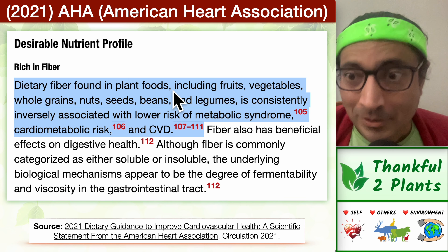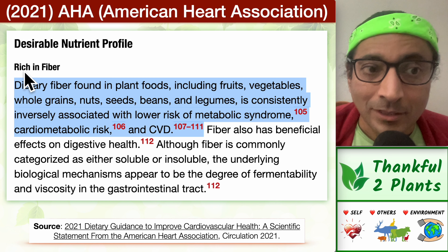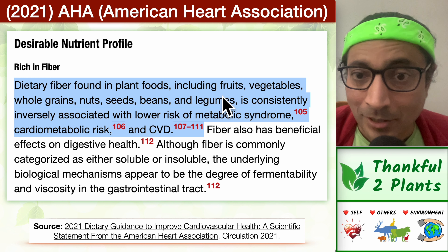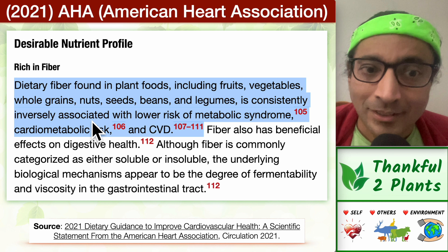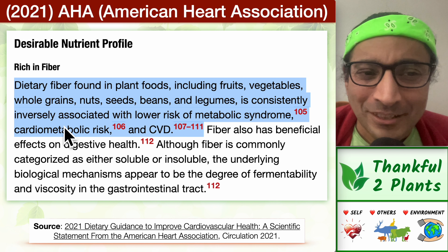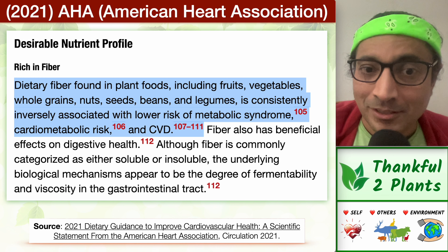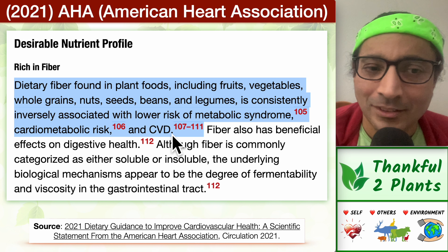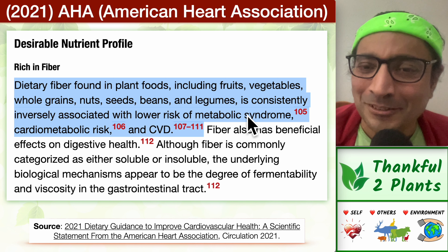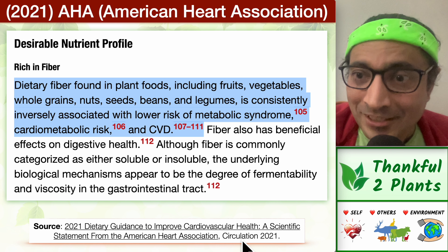The same AHA publication has a section called Desirable Nutrient Profile. The very first item is rich in fiber. It states: dietary fiber found in plant foods is consistently, inversely associated with lower risk of a range of heart-related problems. Inversely associated means: the more fiber we consume, the less the chance of getting coronary heart disease and other cardiovascular and cardiometabolic diseases. More fiber, less disease risk.